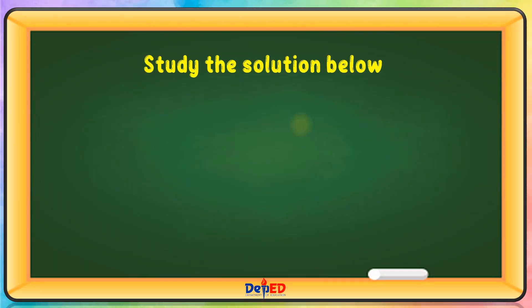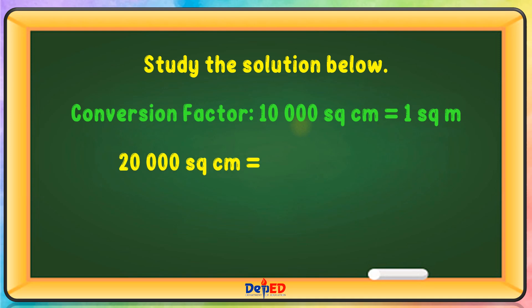Study the solution below. So, conversion factor is 10,000 square centimeter equals 1 square meter. 20,000 square centimeter is equals to blank square meters.